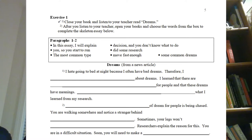Now students are ready to interact with this model, and through that they will come to an understanding of the type of essay they will be writing. Here is Exercise One. It says: close your book and listen to your teacher read 'Dreams.' We just did that. Then the next step is: after you listen, open your books and choose the words from the box to complete the skeleton essay below. We just finished step one — now they're ready to complete the skeleton essay.